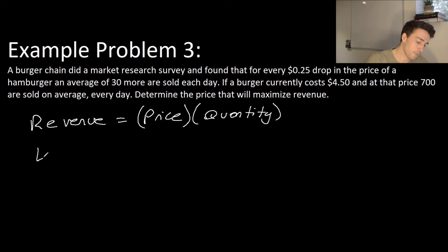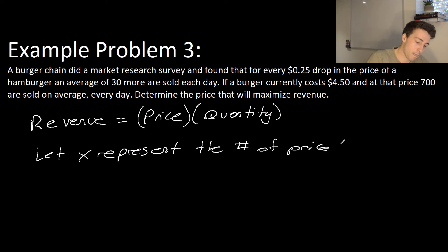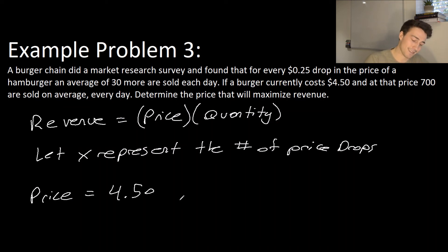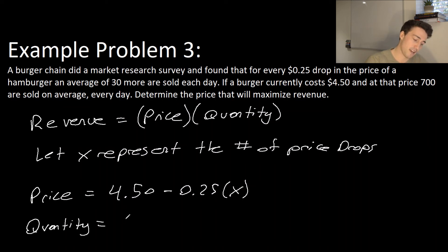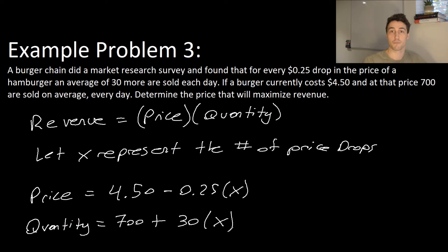Let X represent the number of price drops. The price is $4.50 minus $0.25 times X. So if we drop the price by one unit of 25 cents, the price will be $4.25. The quantity is equal to 700 plus 30 times X. If it drops by one unit of price drop, we're going to have 30 more hamburgers sold.